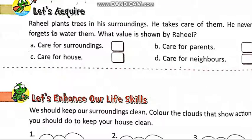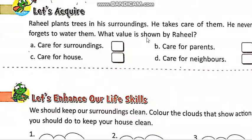Let's acquire. Raheel plants trees in his surroundings. He takes care of them and never forgets to water them. Raheel apni surroundings mein trees ko lagata hai, woh unka khiyal rakhta hai, aur kabhi paani dena nahi bhoolata. What value is shown by Raheel? Raheel koon si value ko show kerta hai? A: care for surroundings — woh apni idgit ka khiyal rakhta hai.